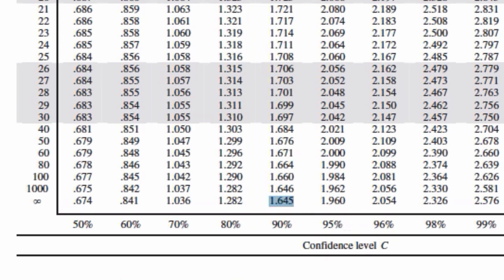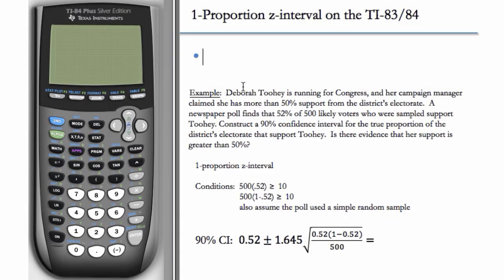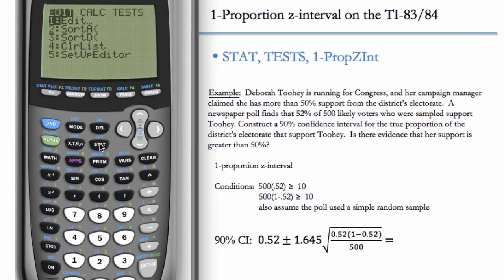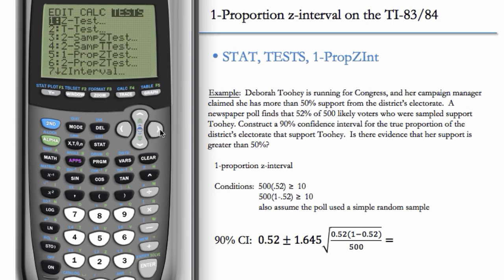Now we have everything set up, so we can grab the calculator. We do STAT, TESTS, and we're going to do 1-PropZInt. So let's go over here to STAT, right arrow to TESTS.